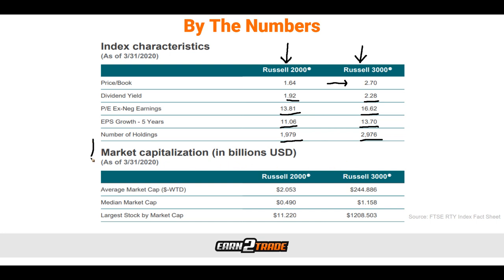Looking at market capitalization in billions of dollars, with the Russell 2000 on the left and the Russell 3000 on the right: the Russell 2000 average market cap was $2.053 billion, whereas comparatively the Russell 3000 had $244 billion. The median market cap for the Russell 2000 was $0.49 billion versus $1.158 billion for the 3000. The largest stock by market cap was $11.22 billion versus $1,208.503 billion. The long story short: the Russell 3000 represents a larger portion financially, but both are very liquid indexes.